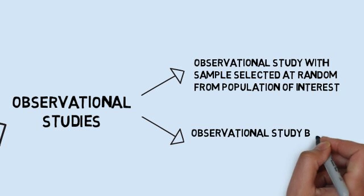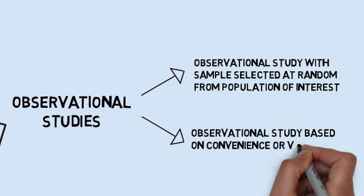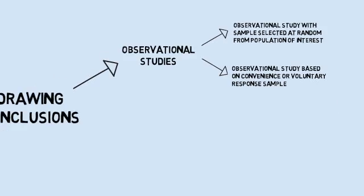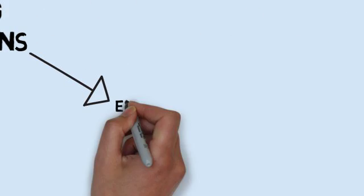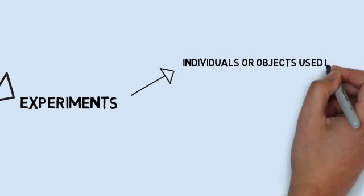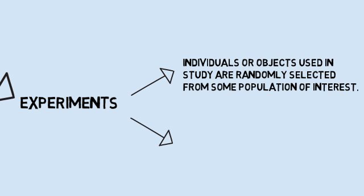As for experiments, they can be categorized two ways as well: one with a random set of experimental units and one with a volunteer or non-random set of experimental units.